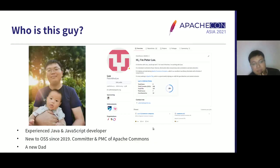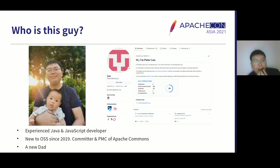Let me introduce myself. My name is Peter Lee — I'm Asian, specifically Chinese. My English name is Peter Lee and my Chinese name is Li Yang. I work at Huawei and I'm an expert in Java and JavaScript. I didn't make any open source contributions before 2019, but now I'm a committer and a PMC of Apache Commons. By the way, I'm a new dad.